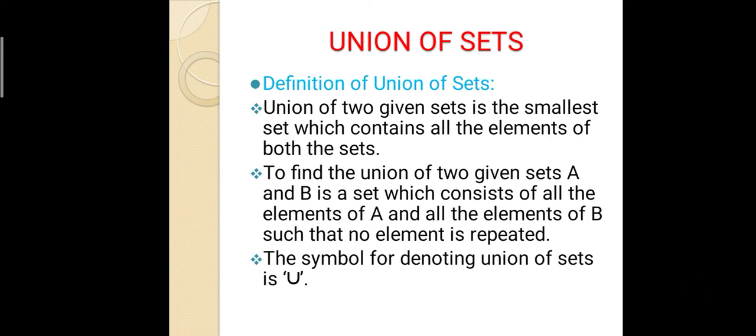Definition of Union of Sets: the union of two given sets is the smallest set which contains all the elements of both sets. To find the union of two given sets A and B, it is a set which consists of all elements of A and all elements of B such that no element is repeated. The symbol for denoting Union of Sets is ∪.